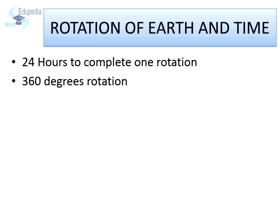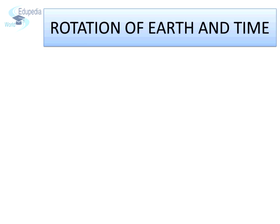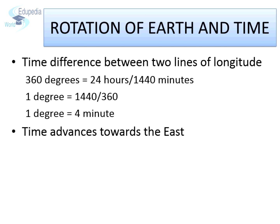In 24 hours every part of the earth faces the sun directly once. This is the time when the sun is at the highest point in the sky — we call it midday or noon at the meridian. Comparing the time of noon at different places, we can identify their longitudinal location and vice versa. Earth's one rotation, which is 360 degrees, takes 24 hours to complete, which means the time difference between two successive lines of longitude will be four minutes. The meridians towards the east will be ahead in time while the meridians towards the west will be behind in time.